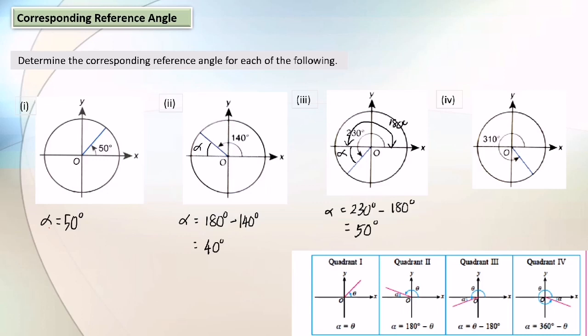The last one: where is the corresponding reference angle? Always at the x-axis. The whole turn is 360 degrees, so 360 minus 310 equals 50 degrees.